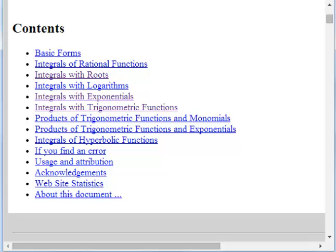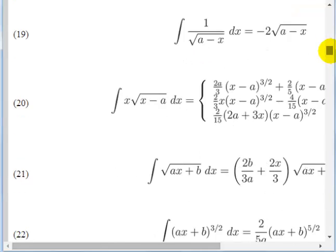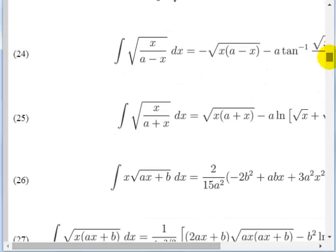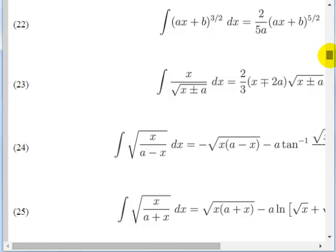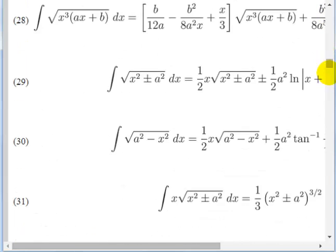Looking at the integral table under integrals with roots, I had 4x² minus 9, so I need to find an x² and then minus an a². As I'm looking down through these, none of these have powers on the x under the radical. Here's number 29.